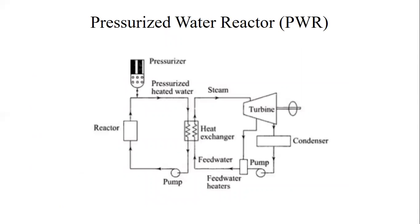The first type is the pressurized water reactor. The excellent properties of water as a moderator and coolant make it a natural choice for power reactors, and the pressurized water reactor has been extensively developed in the United States of America. The most important limitation on the pressurized water reactor, that is PWR, is the critical temperature of water, which is 374 degrees Celsius. This is the maximum possible temperature of the coolant in the reactor, and in practice it is considerably less, possibly about 300 degrees Celsius, to allow a margin of safety.